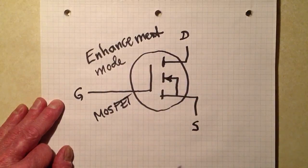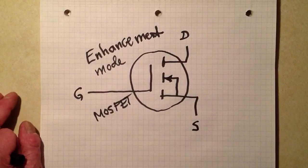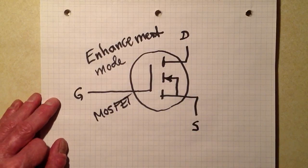P channel, put an arrow pointing out. Just turn that arrow around 180 degrees.